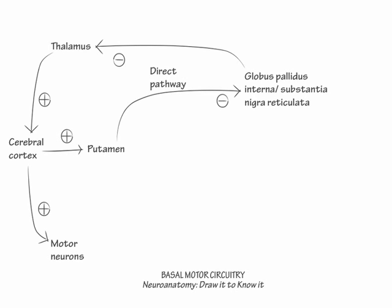Both begin with corticostriatal excitation of the putamen and end with globus pallidus interna substantia nigra reticulata inhibition of the thalamus. Think about the indirect pathway as being just like the direct pathway, with the only addition of passage through the globus pallidus externa, which adds an additional inhibitory step. Because this creates three inhibitory steps in a row, the sum of the pathway is inhibitory.